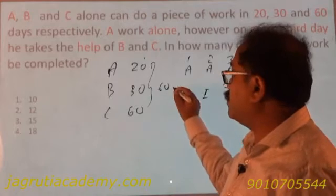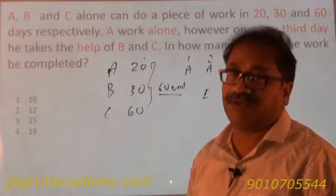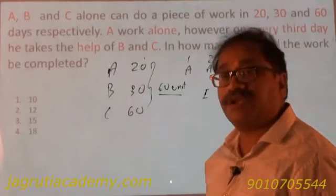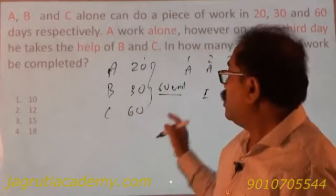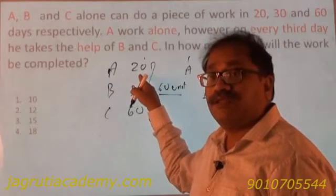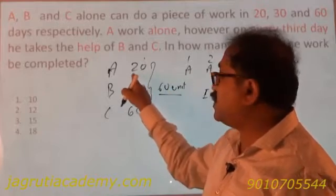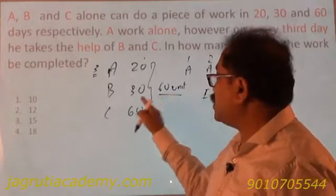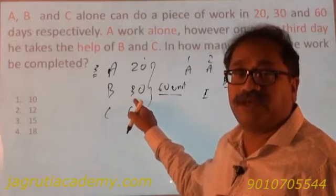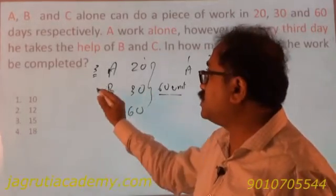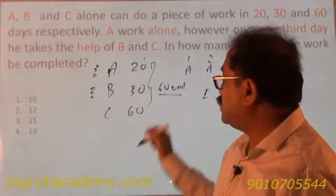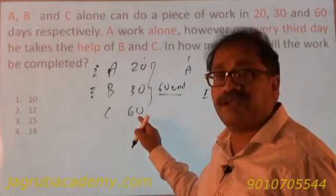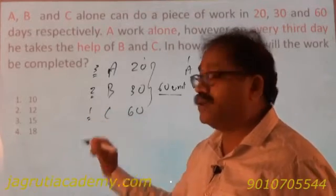So there are 60 units of total work. A completes 60 units in 20 days, B completes 60 units in 30 days, C completes 60 units in 60 days. So 60 divided by 20 is 3 units in 1 day for A. Similarly, 60 divided by 30 is 2 units in 1 day for B. And 60 divided by 60 is 1 unit in 1 day for C.